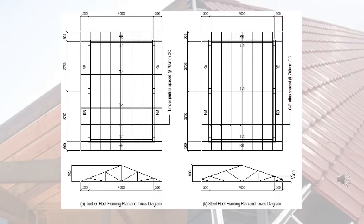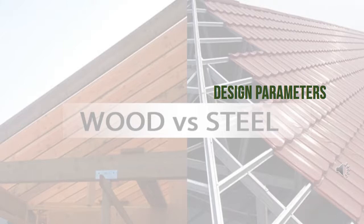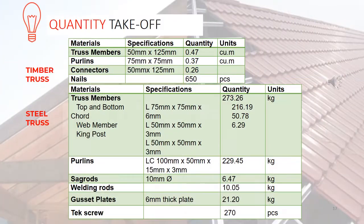Two different roof framing systems were selected as case studies. Case Study 1 was a roof framing system made up of timber truss and purlins, while for Case Study 2, truss and purlins are made of steel. In an attempt to achieve a fair comparison, the structural design was carried out using ETABS design software, considering the same design parameters set by the National Housing Authority for Disaster Resilient Houses. Based on the analysis and design, the cross-sections for timber and steel truss members were obtained, and the quantity of materials required to construct one functional unit was estimated.